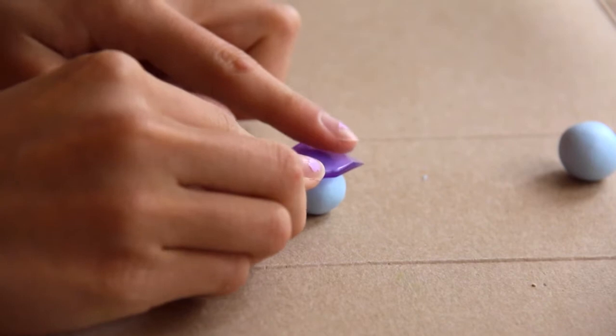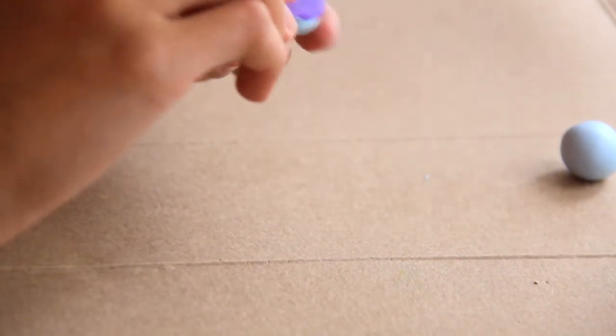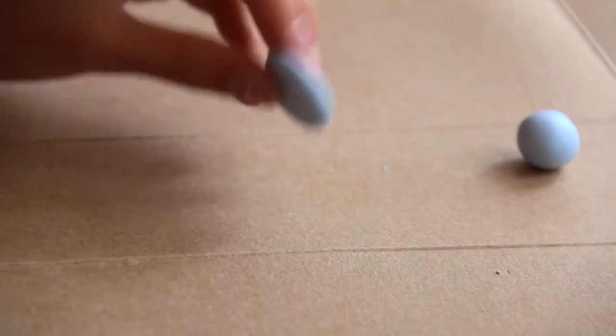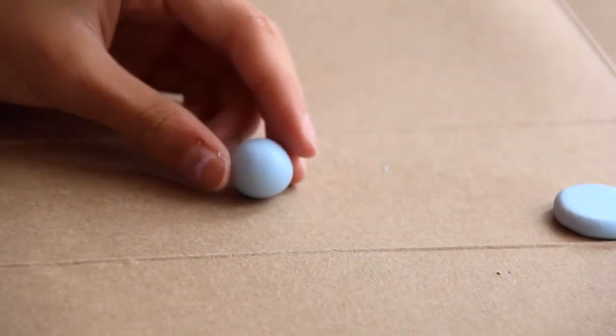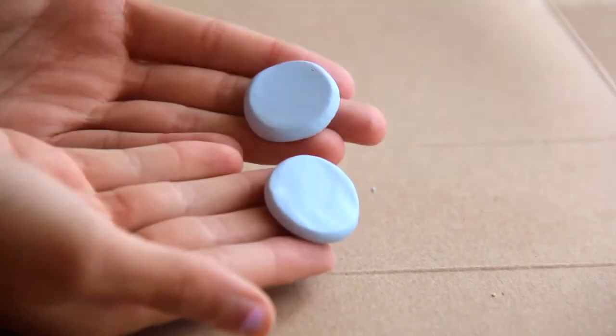Next, take your clay shaping tool or any flat surface and flatten both of your colored balls. Make sure that they are the same thickness and size so that they will be sandwiched on top of each other, or else that will look kind of strange. Just flatten them with your fingers or whatever works for you and make sure that they are smooth on the top and bottom.